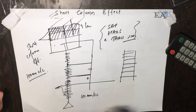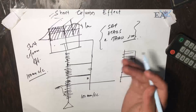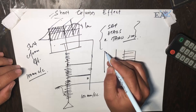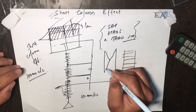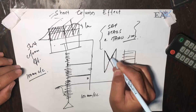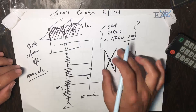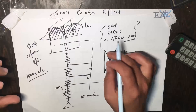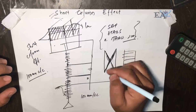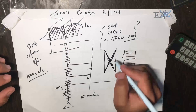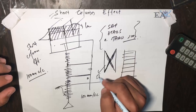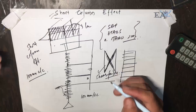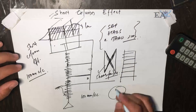One thing I forgot to mention: whenever a column has failed due to the short column effect, the pattern of failure is an X-shape. On the surface of the column there is a clear, large X mark — not a small hairline crack, but a clear big X mark. The column fails in this X-like pattern, and the failure mode is shear failure due to the high shear force. I hope this video was helpful — thank you for watching and take care.